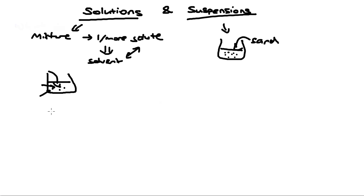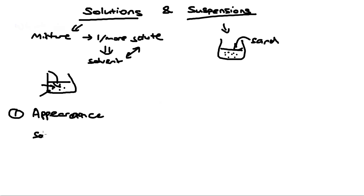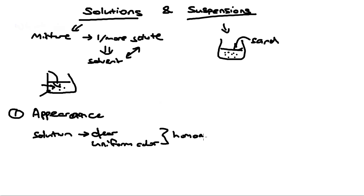How can we tell when a mixture is a solution and when it is a suspension? There are a couple of criteria. First, you can tell by the appearance. Solutions tend to be clear and the colours are uniform. We also call this a homogeneous mixture.